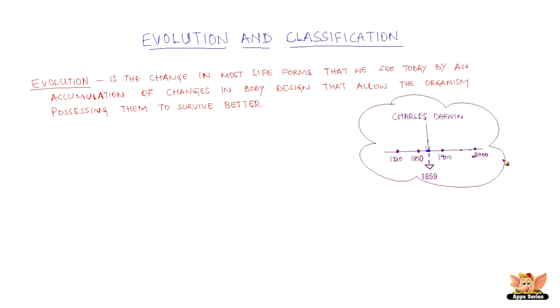Charles Darwin first described the idea of evolution in 1859 in his book, The Origin of Species.